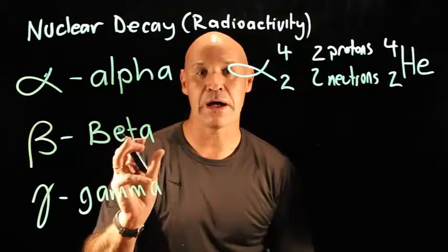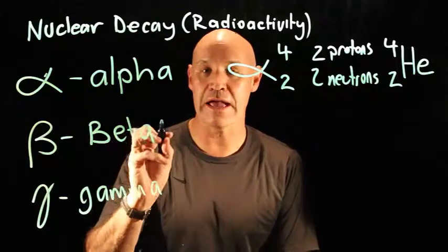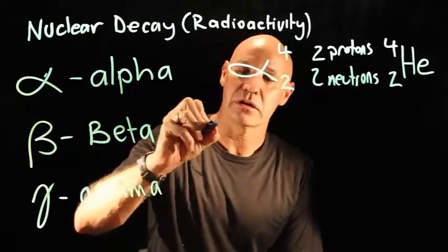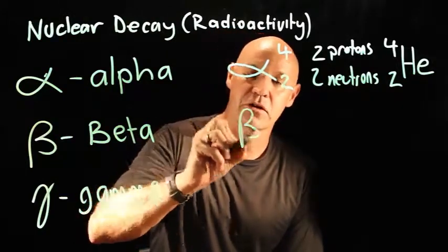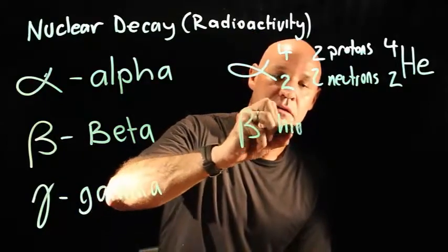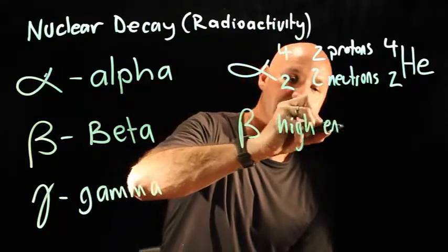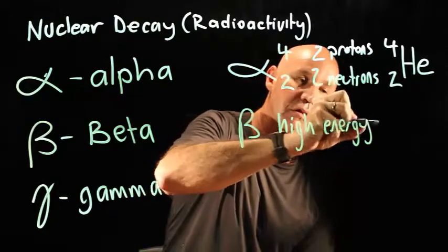Beta decay. What a beta particle is, is it's a high energy electron. So we describe it like that, as a high energy electron.